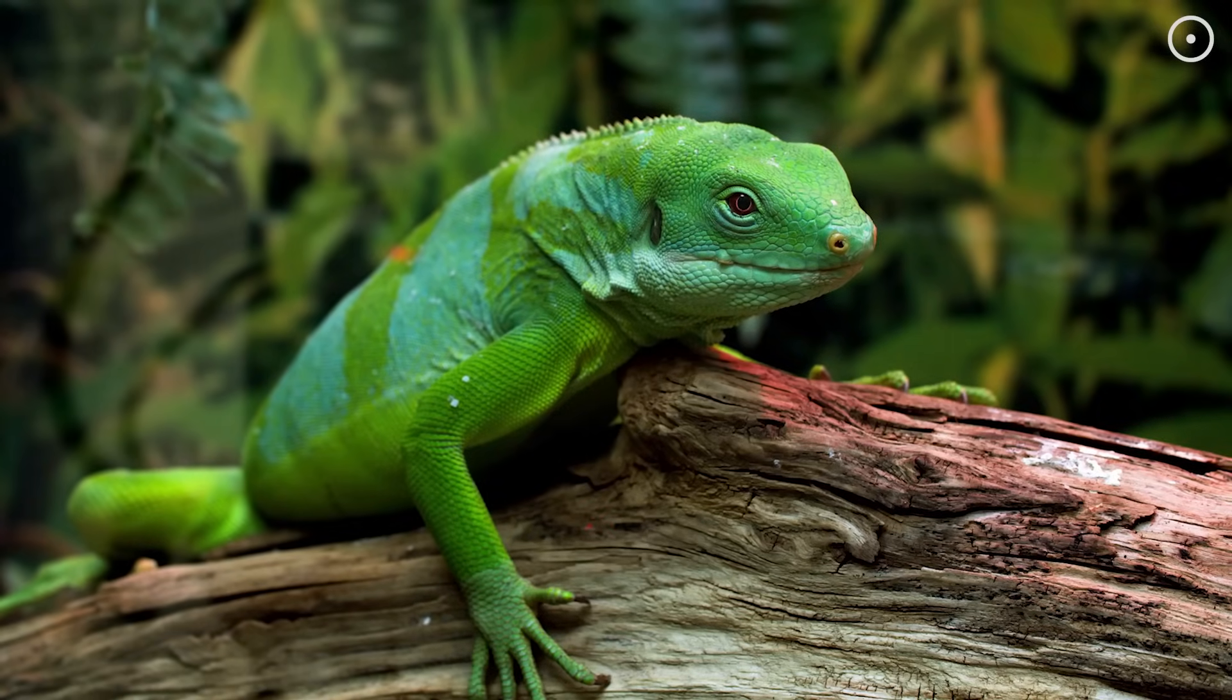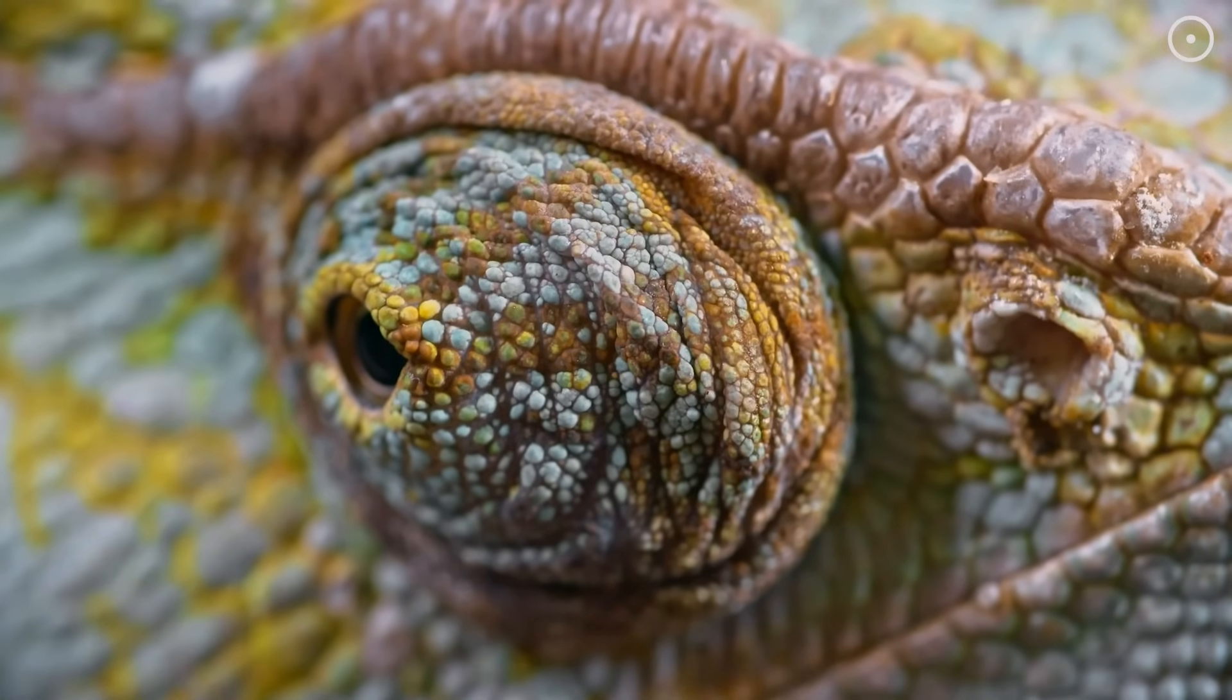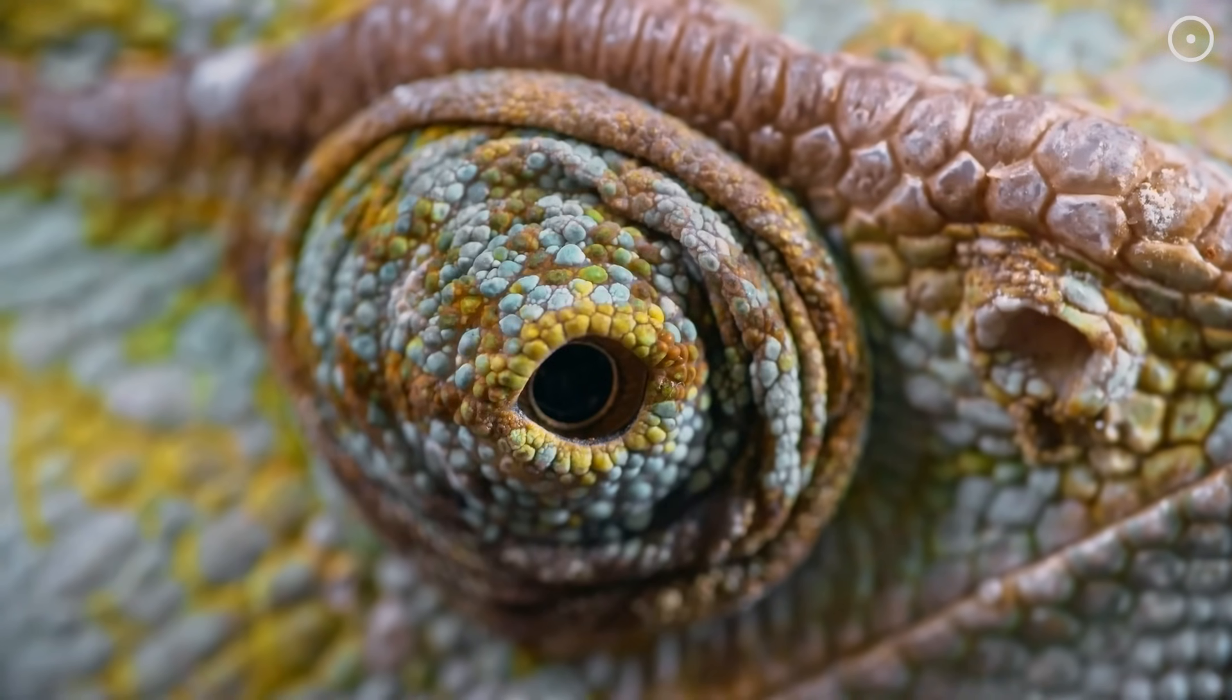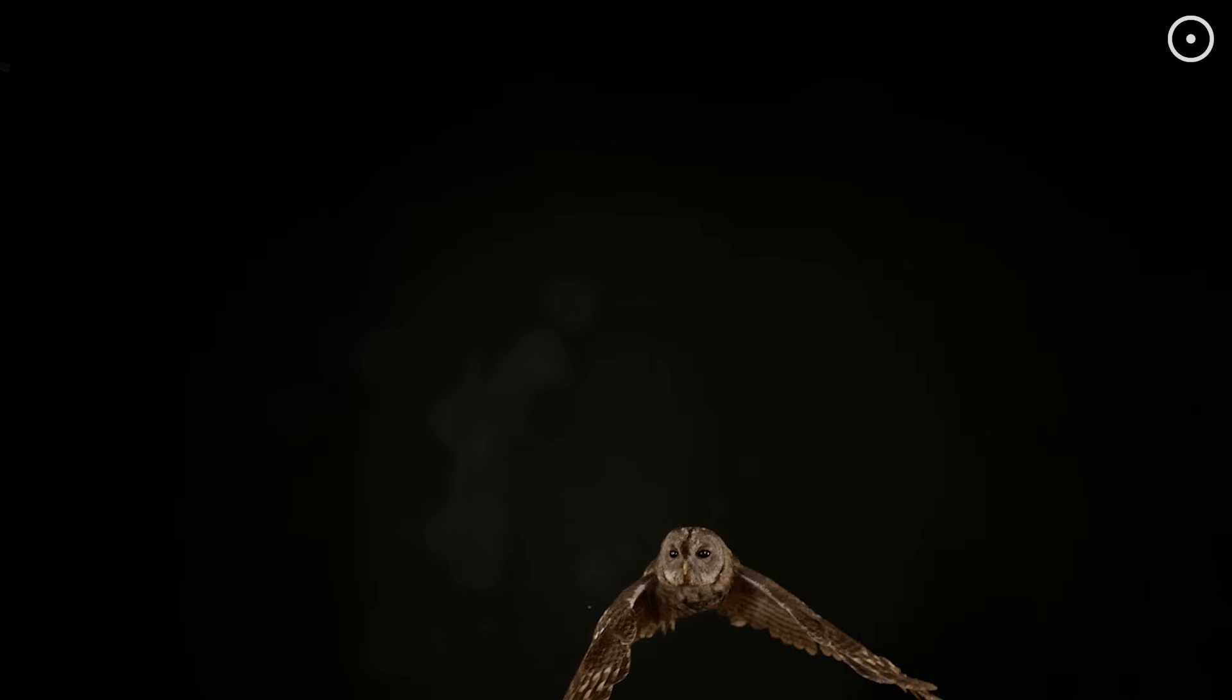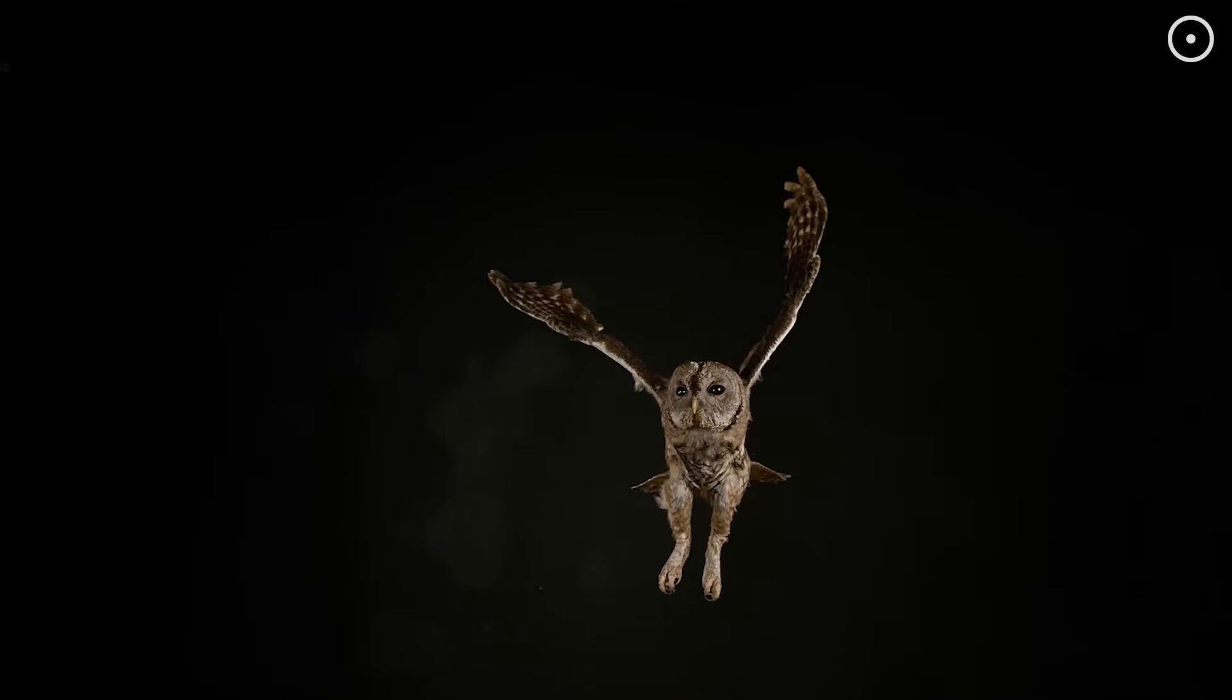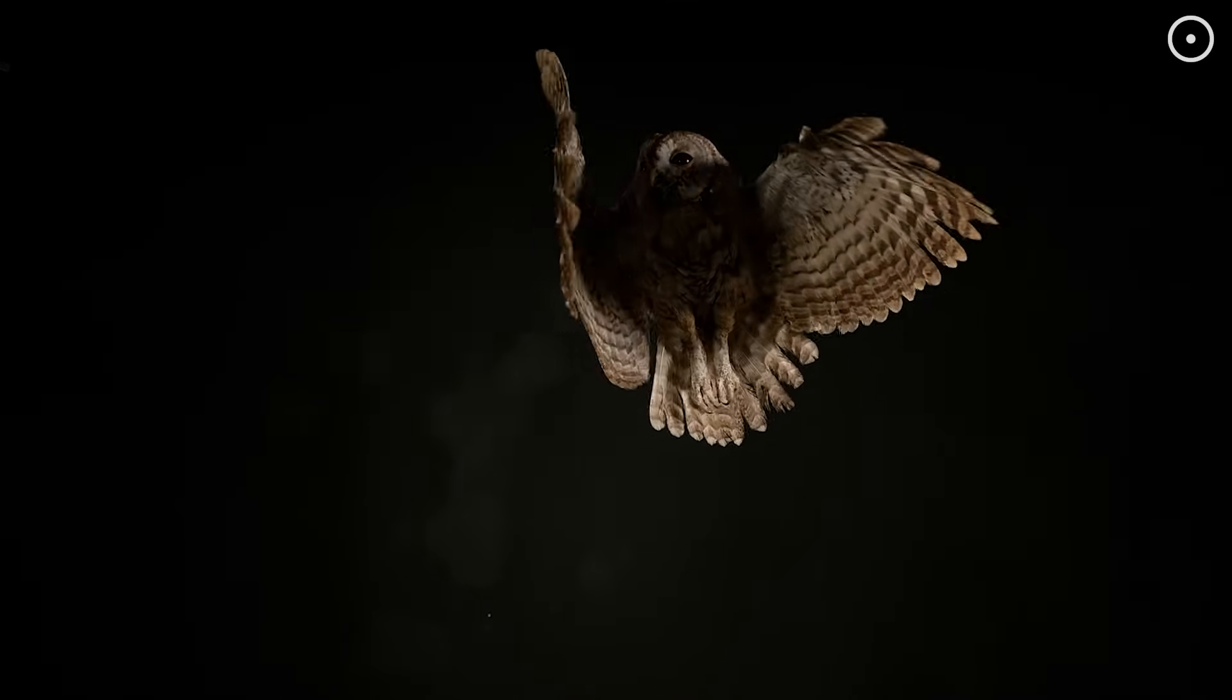Animals would have evolved wild adaptations too. Imagine creatures with two different types of eyes, one for each sun-specific light. Or nocturnal animals that time their activities around the complex dance of double shadows.